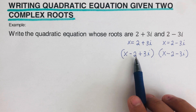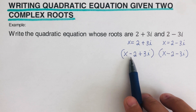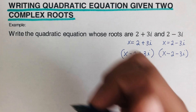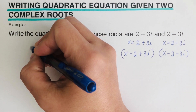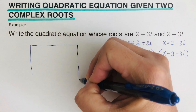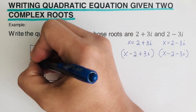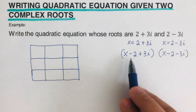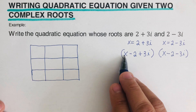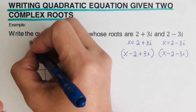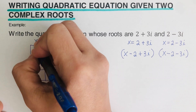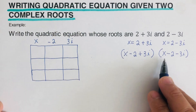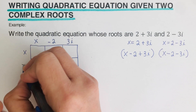To multiply, we'll use a three-by-three box because each factor has three terms. We set up the box with the terms of the first factor — x, negative two, positive 3i — along one side and the terms of the second factor — x, negative two, negative 3i — along the other.